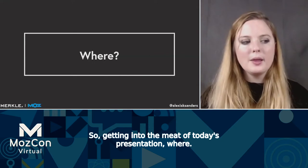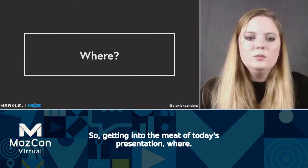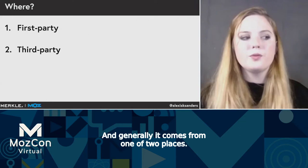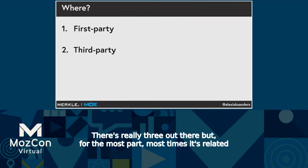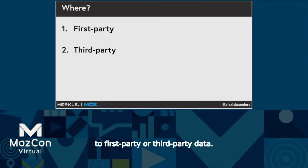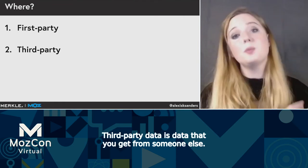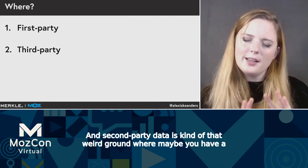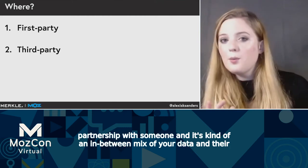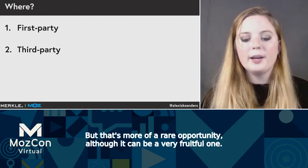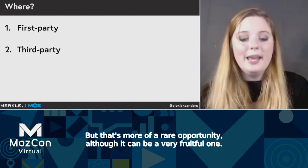Getting into the meat of today's presentation: where? Where do we actually find this data? Generally it comes from one of two places — though there are really three. Most times it's related to first-party or third-party data. First-party data is your own data that you collect and assimilate. Third-party data is data that you get from someone else. And second-party data is that weird middle ground where maybe you have a partnership with someone — a cross-sharing mix of your data and their data. That's a rarer opportunity, though it can be a very fruitful one.